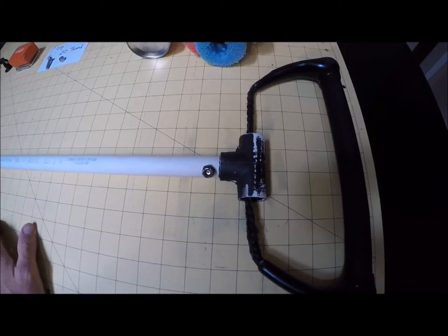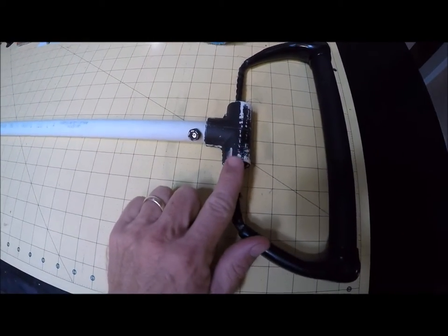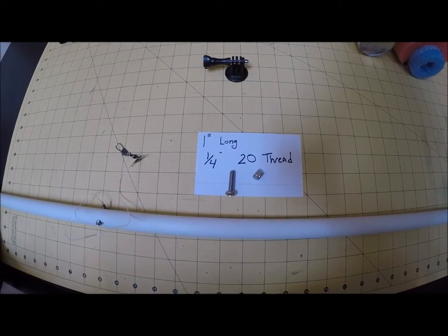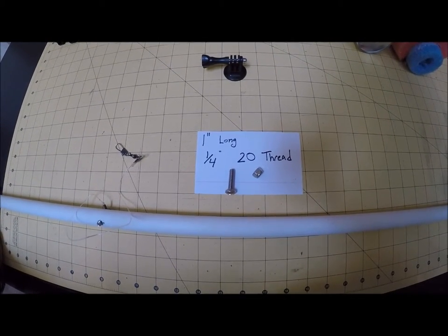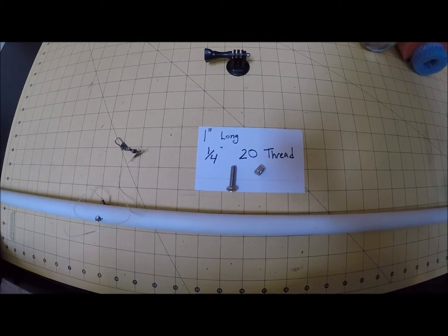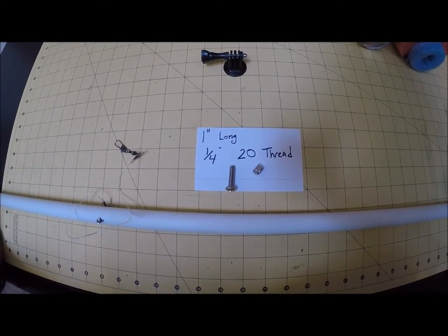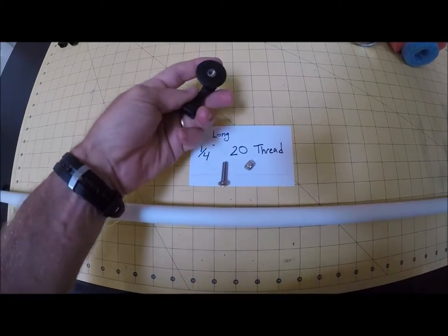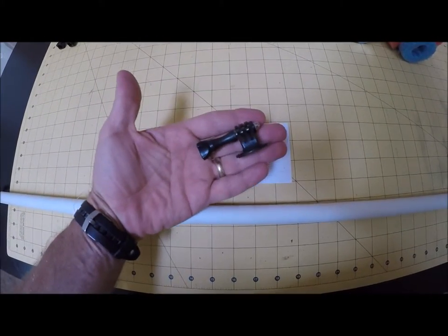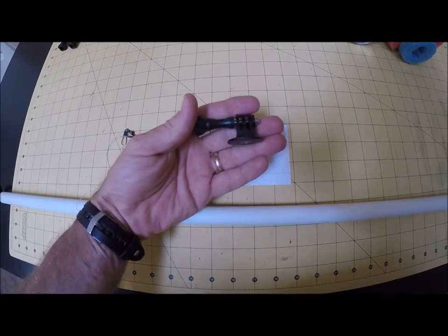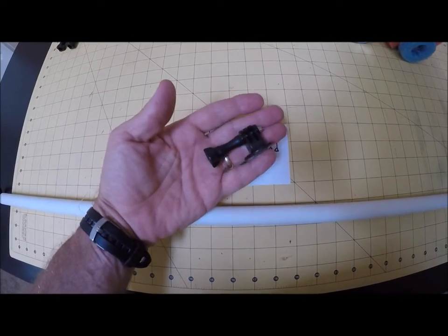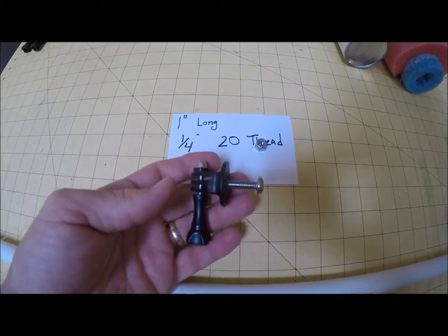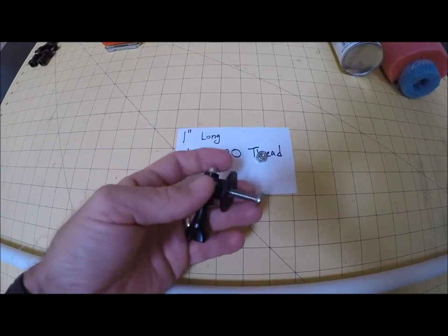You are also going to need a half inch T PVC connector. I also used two stainless steel nuts and bolts. The bolts are one inch long, quarter inch diameter with a 20 thread count, and that is the correct thread count to fit into the GoPro tripod mount. This one I got off of Amazon for about $10. You can see the bolt fits into the tripod mount perfectly.